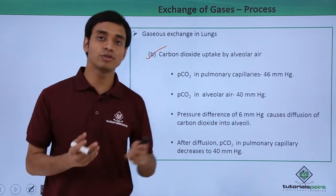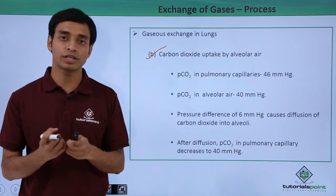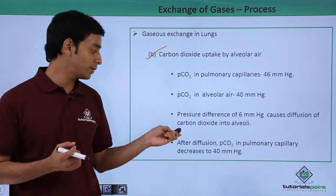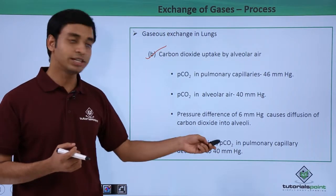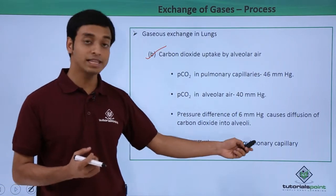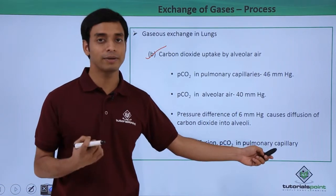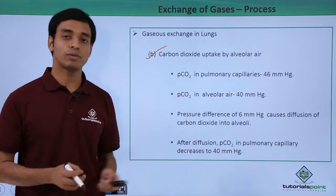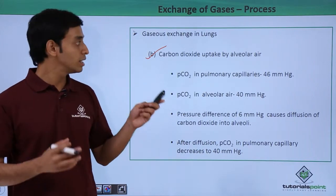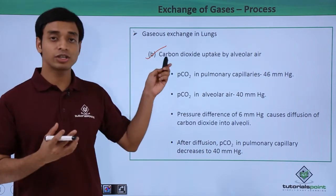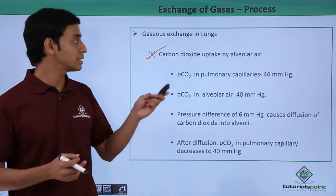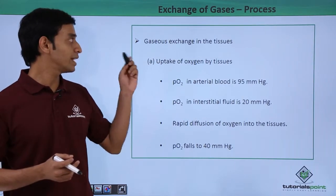Because of this partial pressure difference of about 6 mmHg, carbon dioxide diffuses from the blood into the alveolar air. After diffusion, the partial pressure of carbon dioxide in the pulmonary capillary decreases to about 40 mmHg. This completes the gas exchange happening in the lungs.